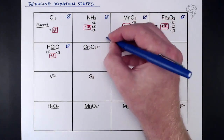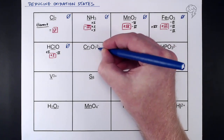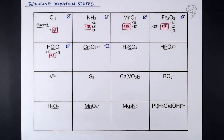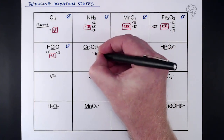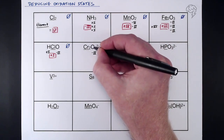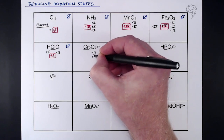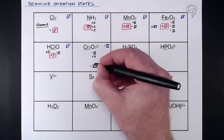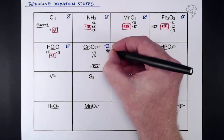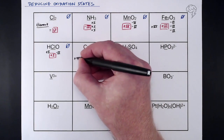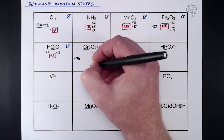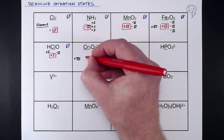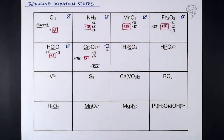The dichromate ion, Cr₂O₇²⁻: the overall oxidation state is -2 because it has a 2- charge — so we're aiming for -2, not zero. We're finding chromium. Each oxygen is -2, and we've got seven of them, so 7 × -2 = -14. We need to get from -14 up to -2, so the difference is +12. There are two chromium atoms, so each chromium must be +6. That's our oxidation state of chromium in the dichromate ion.